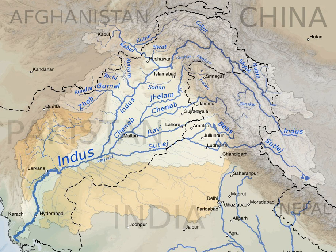The Indus Waters Treaty is a water distribution treaty between India and Pakistan, brokered by the World Bank to use the water available in the Indus system of rivers located in India. The treaty was signed in Karachi on September 19, 1960, by the first Prime Minister of India, Pandit Jawaharlal Nehru, and then President of Pakistan, Ayub Khan.